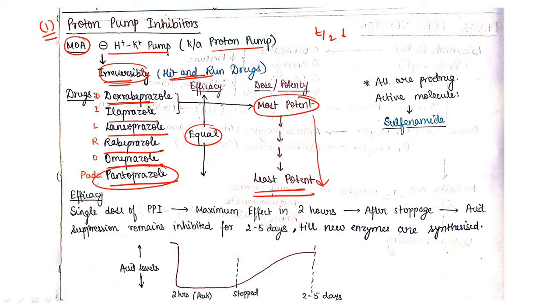One more important point: all are prodrugs. Remember this, all are prodrugs. Active molecule is sulfenamide. Now coming to the efficacy, single dose of PPI causes maximum effect in first two hours and after stopping, acid suppression remains inhibited for next two to five days. Because of this I am telling that these drugs are hit and run drugs, because they cause irreversible inhibition. Until new enzymes are synthesized, there is not going to be acid production. This drug diagram is showing two hours, then it stops, then after two to five days it will again come to normal.